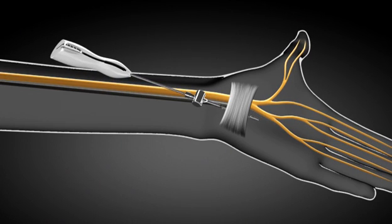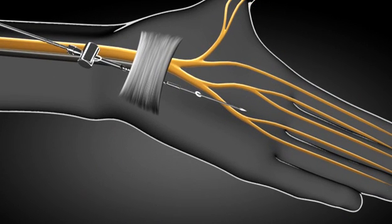Once the carpal tunnel release blade assembly tip is properly positioned at the palmar exit point, the carpal tunnel release blade is advanced by advancing the proximal thumb lever. Advancing the thumb lever exposes the carpal tunnel release blade cutting surface.